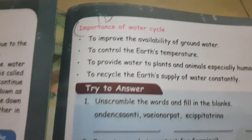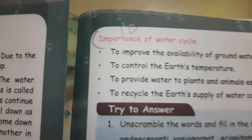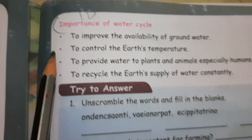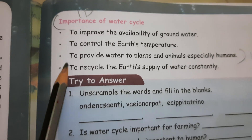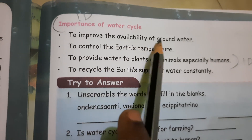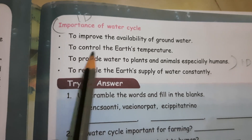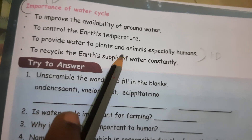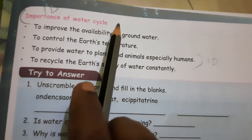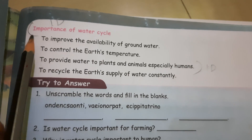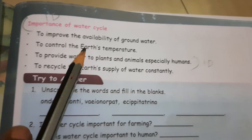For the importance of water cycle, write any three points: 1. To improve the availability of groundwater. 2. To control the earth's temperature. 3. To provide water to plants and animals, especially humans. These are the three points for the importance of water cycle. This is the answer for the first detailed question.